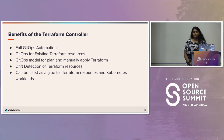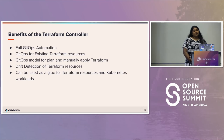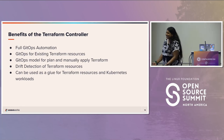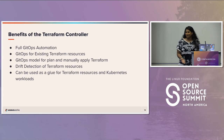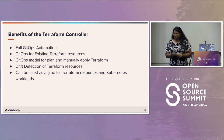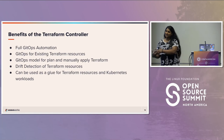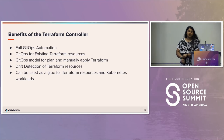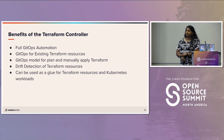The benefits of the Terraform controller are that you can now do full GitOps automation for your Terraform resources. If you're familiar with Terraform — the usual way of deploying things — you do a plan, check the output, and then apply. You can still do that with this if you don't want automatic deployments. You can set it to do manual applies.